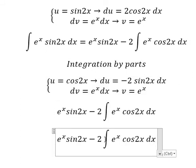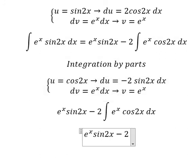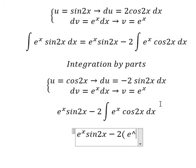So for this one we have u multiplied by v, that should be e to the power of x times cos(2x).